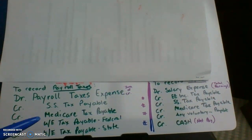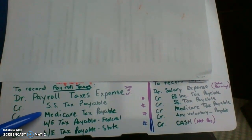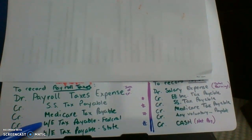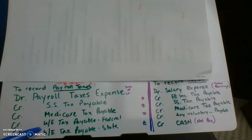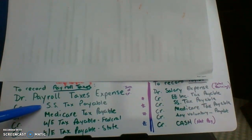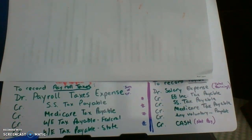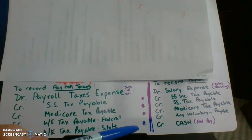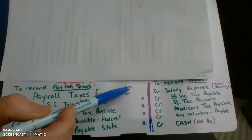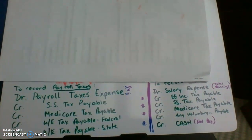The four credits are: Social Security tax payable, Medicare tax payable, unemployment tax payable federal, and unemployment tax payable state. Those are all credits. Add them all up, and that total is the debit to payroll taxes expense.